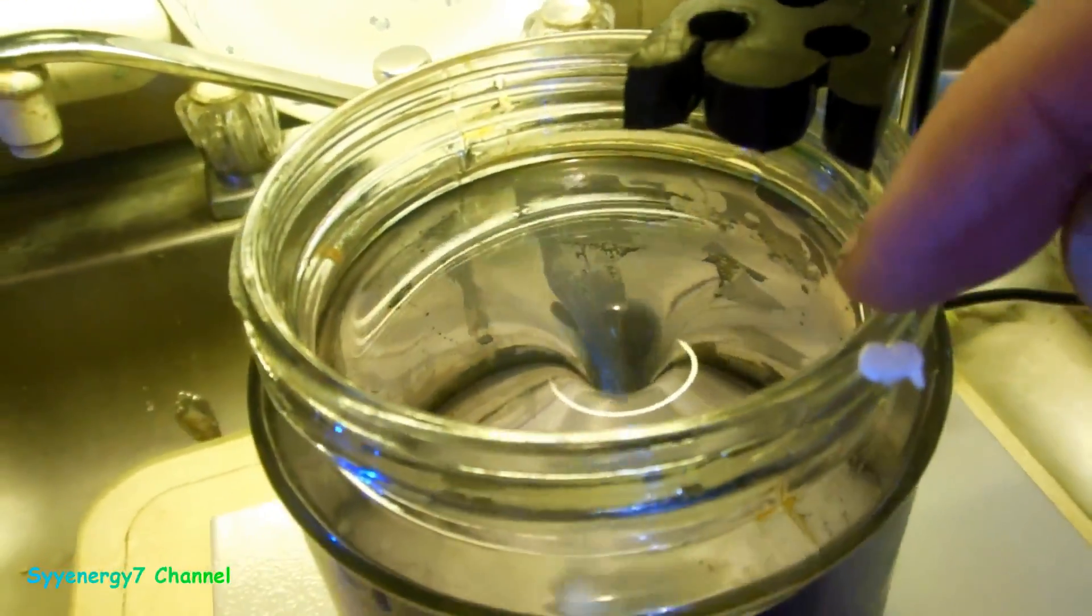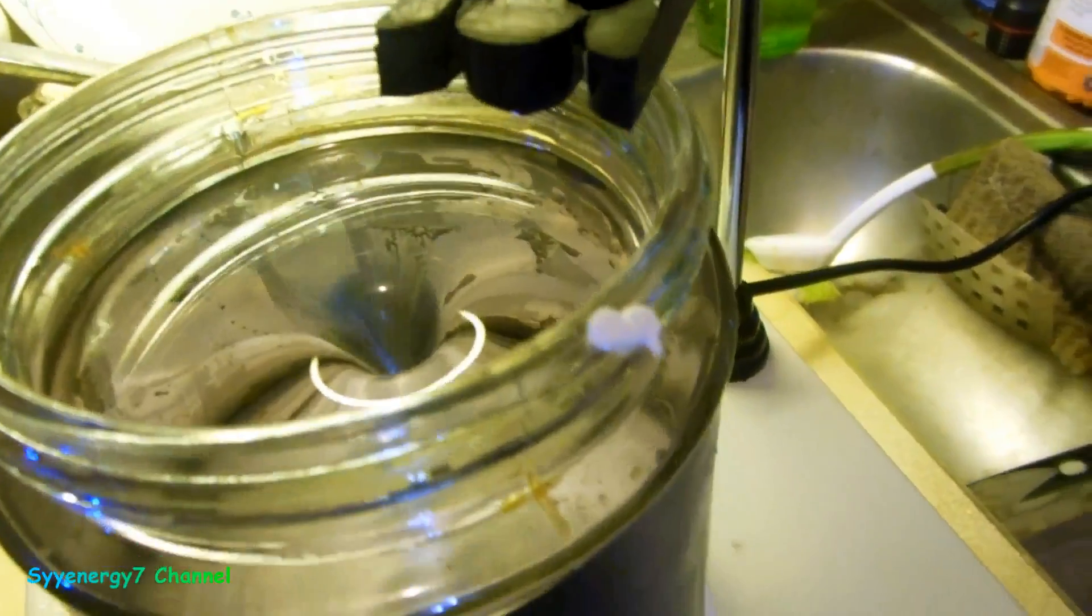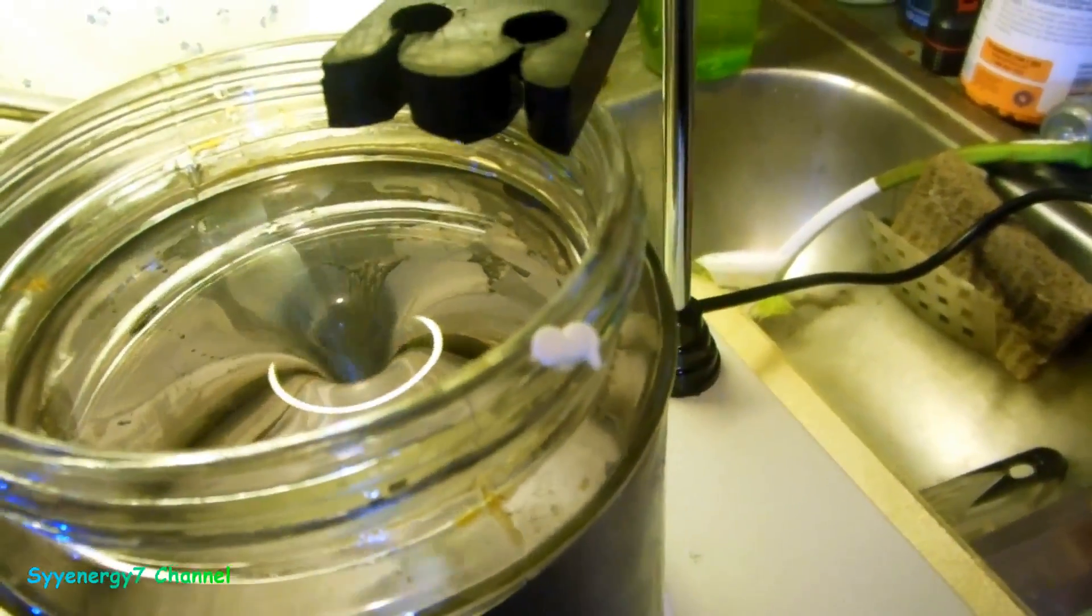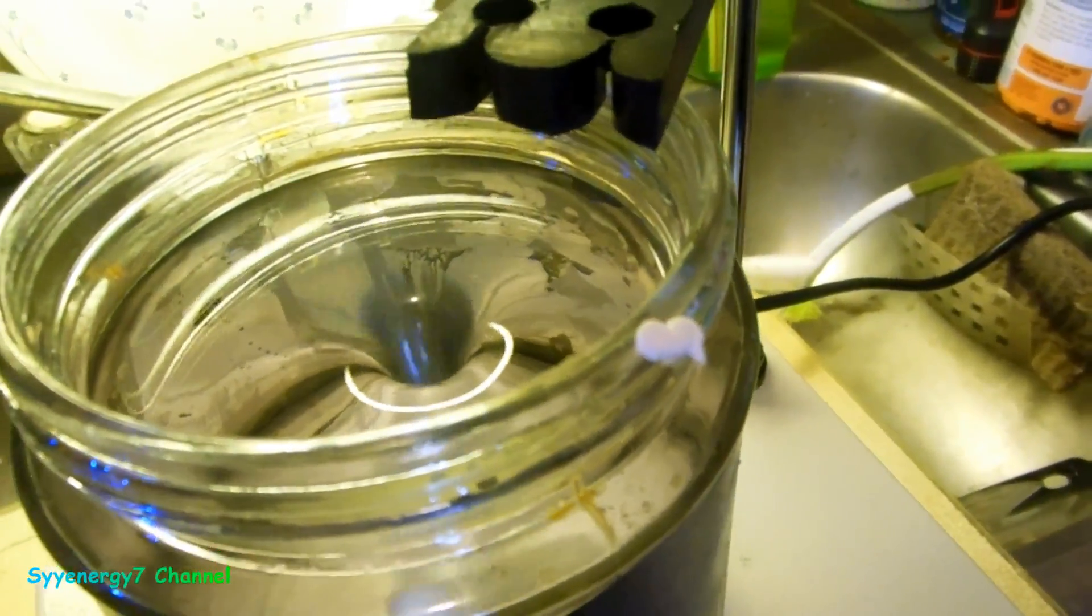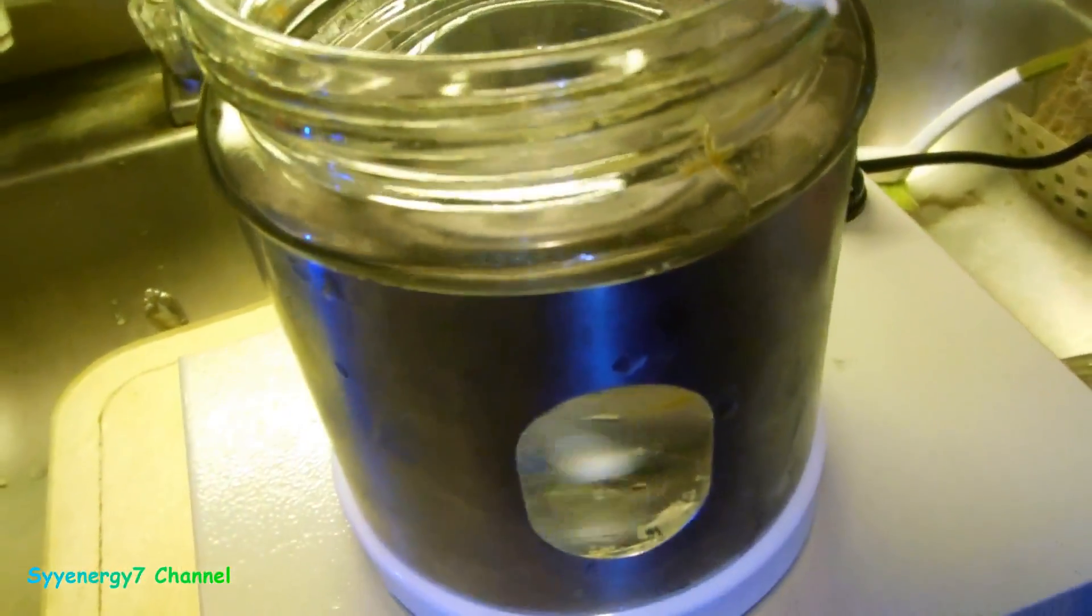So that's the thing you need for making colloidal silver. And I guess there's an added precaution. I would put the lid on here like loose or something and put the top on like that.